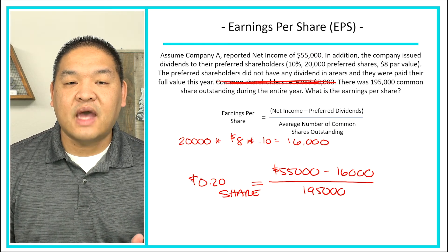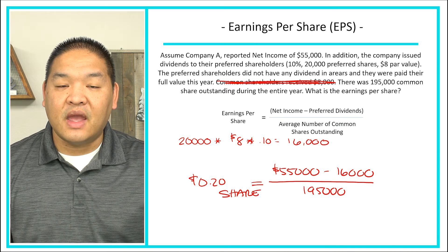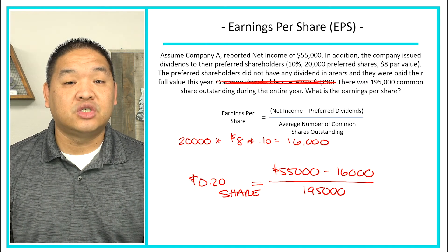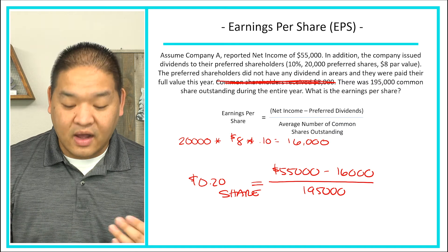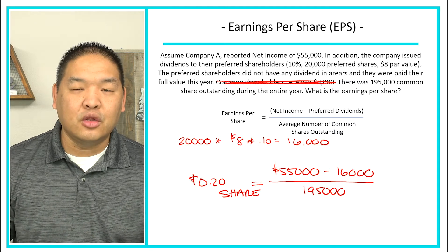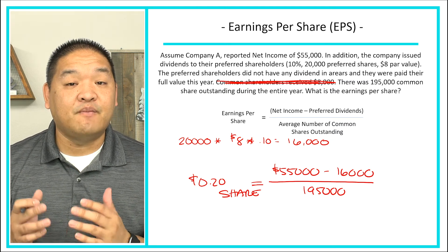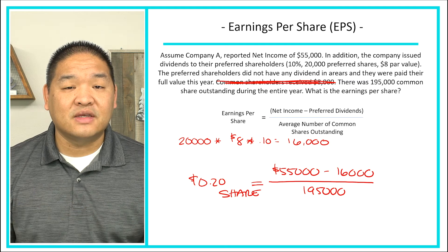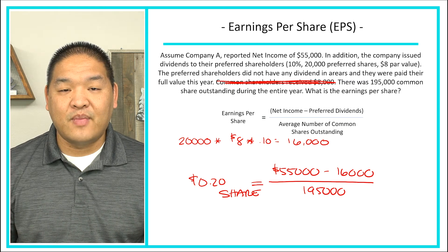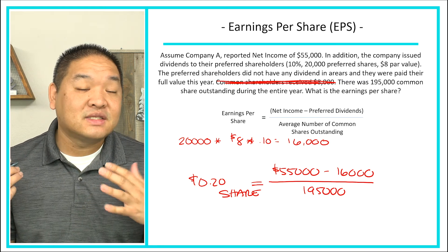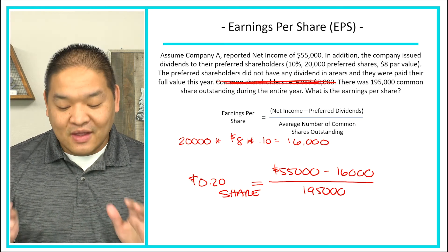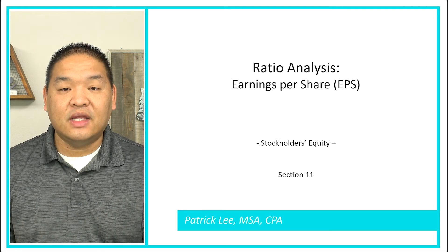What that means is if you own one share, 20 cents of the company's net income is attributed to you. If you own a hundred shares, that would be $20 of the $55,000 net income. Is this good or bad? We're not really sure — we have to compare it to the prior year and our predictions. It is positive, which is at least semi-good, but if last year was $1 a share, then this result is disappointing. That's how we calculate earnings per share.